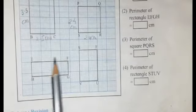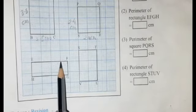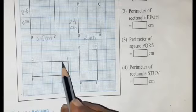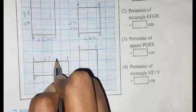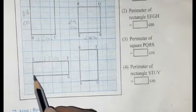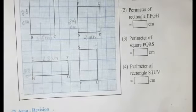Now see next figure EFGH. This is a rectangle. The length is 1, 2, 3 centimeters and counting the small lines — 1 through 8 — so 3.8 centimeter is the length. The breadth is 1 centimeter and counting small lines 1, 2, 3 — so 1.3 centimeter is the breadth of this rectangle.